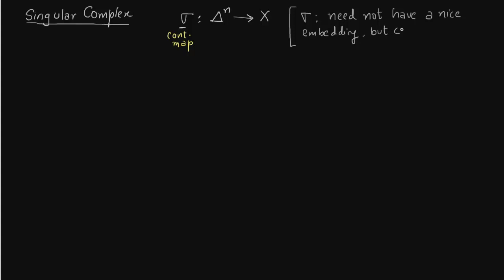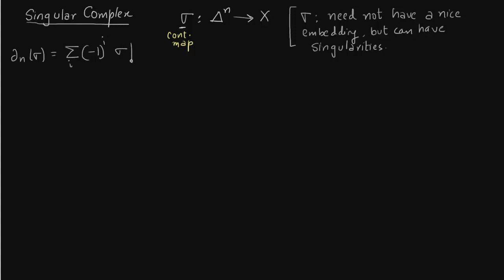Another important point is that these maps are continuous. What they do is — there are some components, say five parts in C1. The map sigma will act continuously on the one-simplices and take them to the corresponding components in C0. The boundary of the map is precisely what it is in simplicial complexes; just that instead of the simplicial complex itself, we write sigma acting on that simplicial complex.